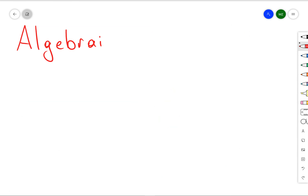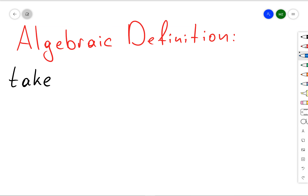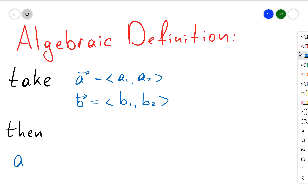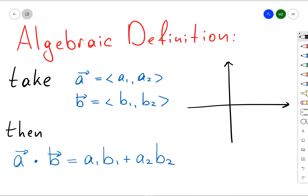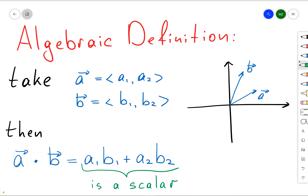Now let's define the dot product using the algebraic definition. Take vector a with coordinates a1 and a2, and vector b with coordinates b1 and b2. Then a dot b is defined as a1 times b1 plus a2 times b2 — in other words, the product of the x-components plus the product of the y-components. One important observation: when you take two vectors and find their dot product, the result is a scalar.